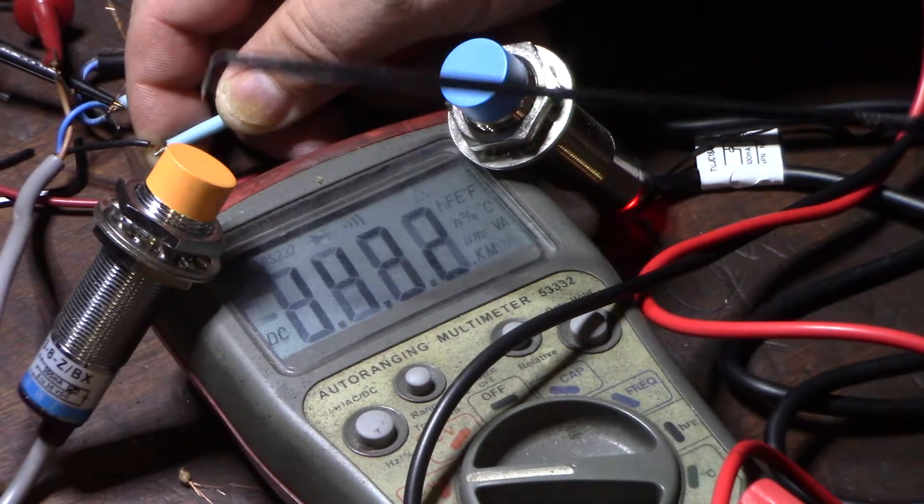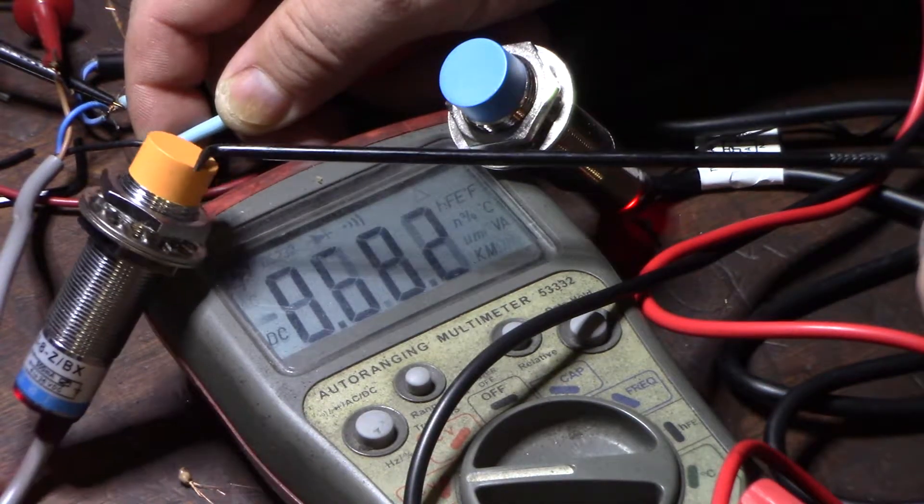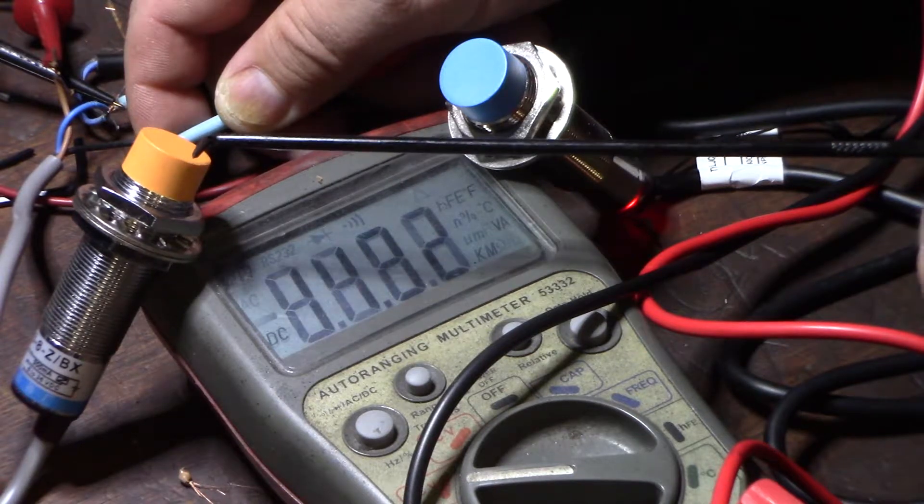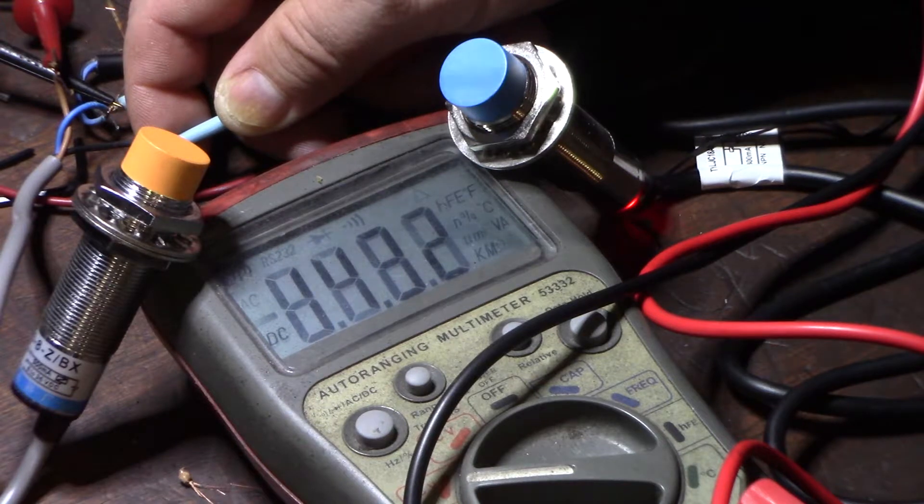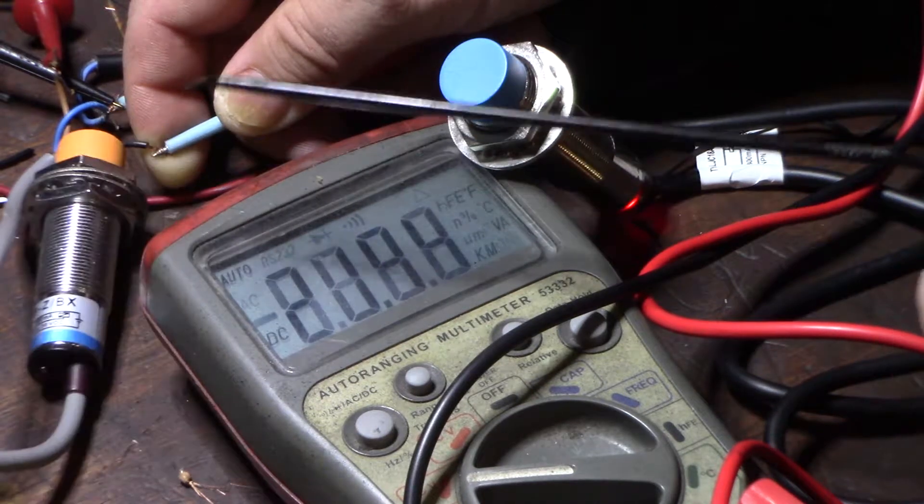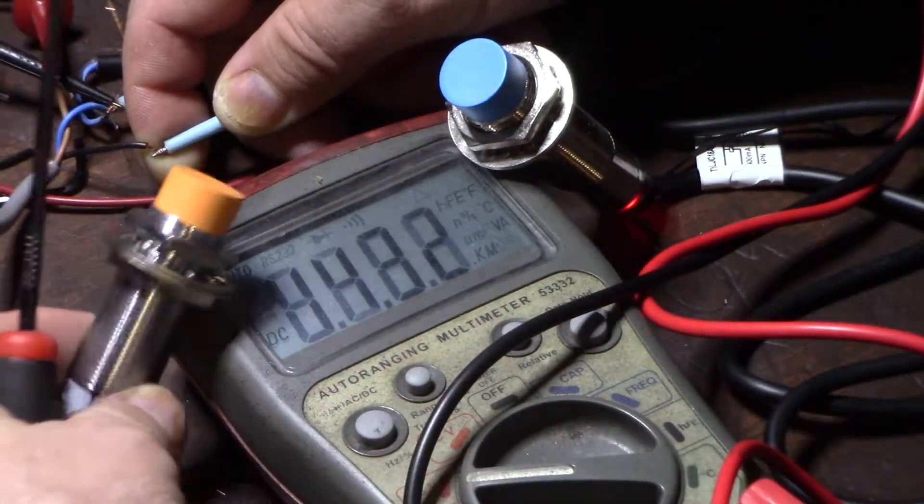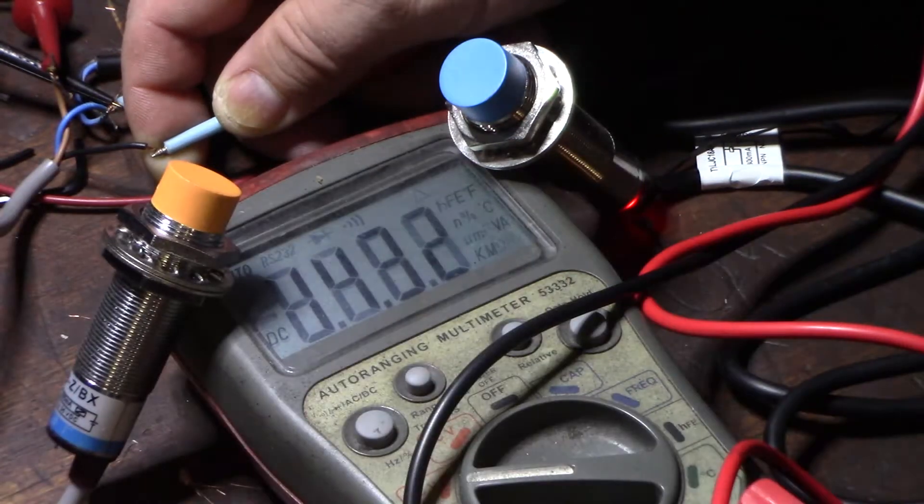Once it's activated I go down to less than a volt. So unactivated it's sending the full current through. Activated less than a volt. So this would basically tell your 3D printer that okay, now this is my bed.